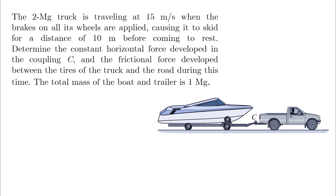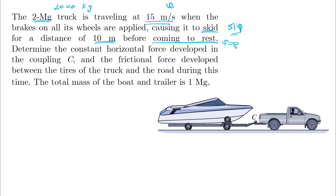The 2 Mg truck means 2,000 kg. It's traveling at 15 meters per second when the brakes on all its wheels are applied, causing it to skid — skid means slip — for a distance of 10 meters before coming to rest. So we have the distance and the final velocity, which is equal to zero.